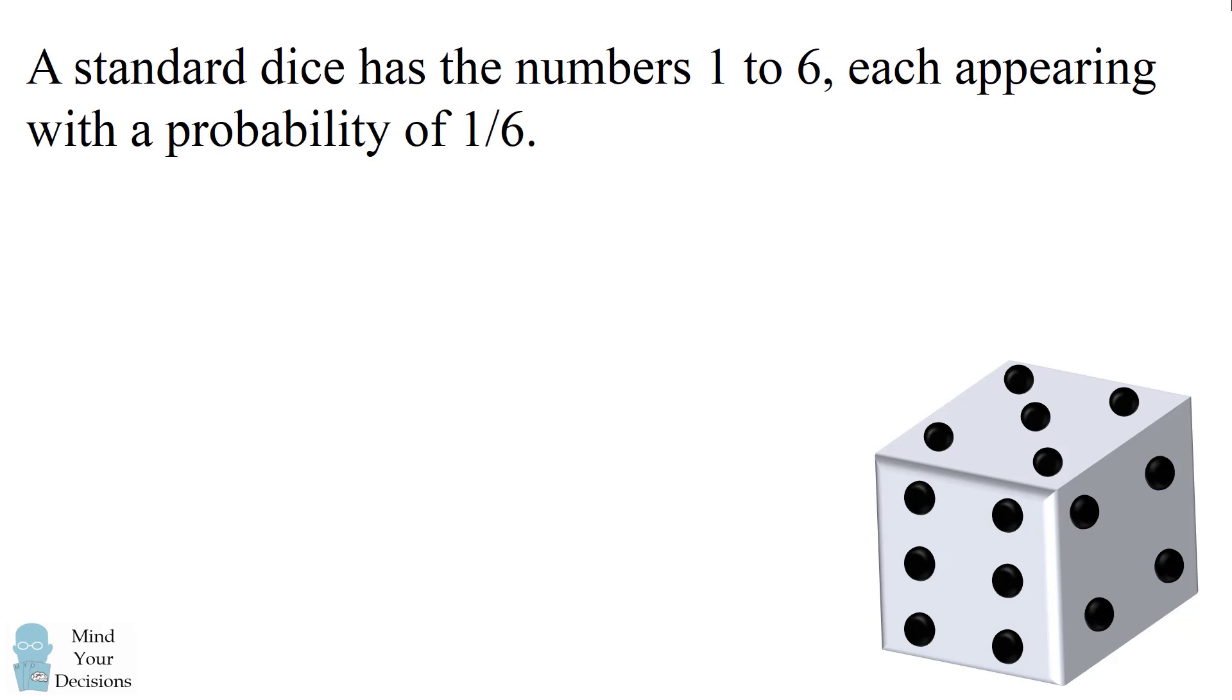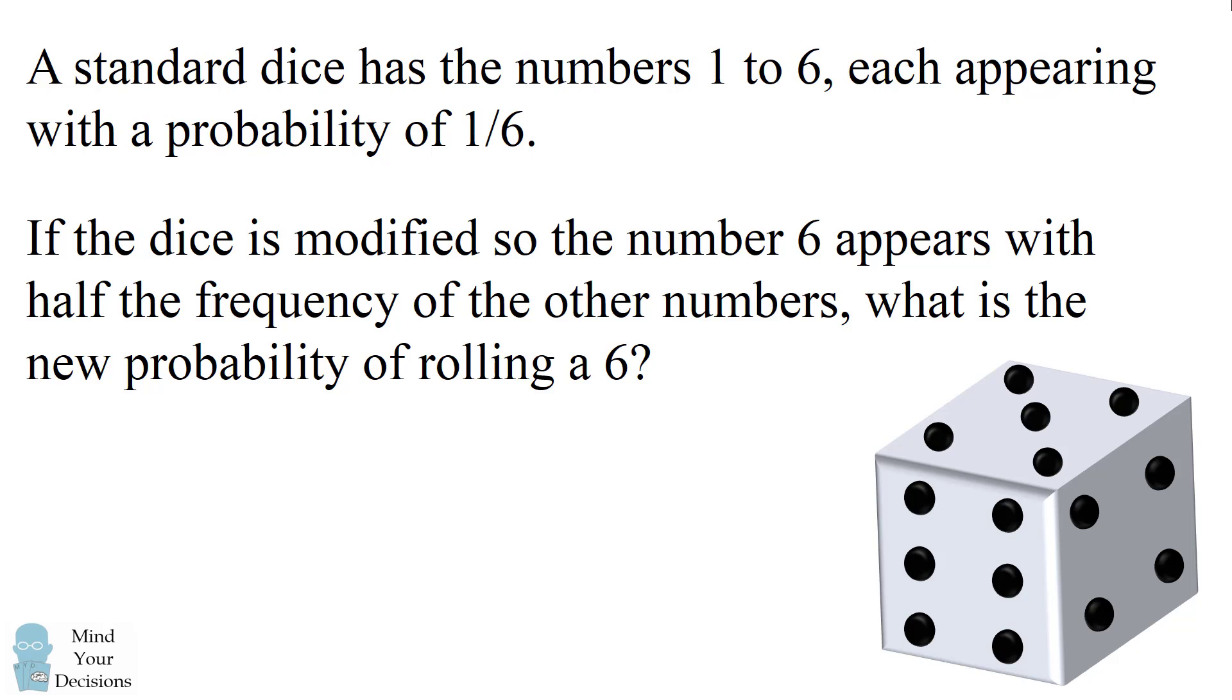Hey, this is Presh Talwalkar. A standard dice has the numbers 1 to 6, each appearing with the probability of 1 sixth. If the dice is modified so the number 6 appears with half the frequency of the other numbers, what is the new probability of rolling a 6?